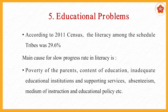Educational problems: according to the 2011 census, literacy among scheduled tribes was only 29.6 percent — not even 30 percent. The main causes for the slow progress in literacy are poverty of the parents, irrelevant content of education, inadequate educational institutions and supporting services, absenteeism, and issues with medium of instruction and educational policies. The content of education remains alien to them and they are not much interested in studies, plus there is poverty and inadequate educational institutions.